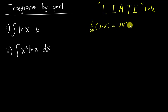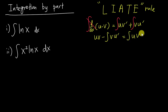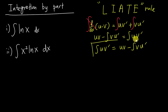If I add the integration sign for every single term, I can simplify. Moving one term to the other side, I get uv minus the integral of v du, which equals the integral of u dv. Rearranging, the integration by parts formula is: integral of u v' equals uv minus integral of v u'.